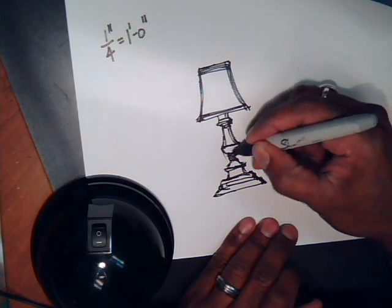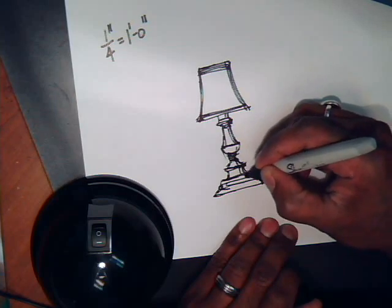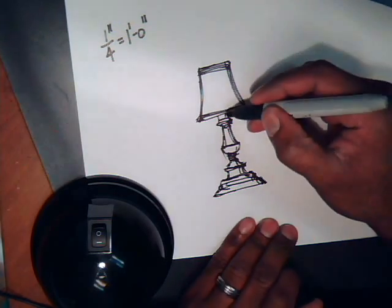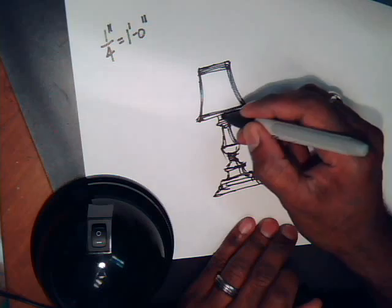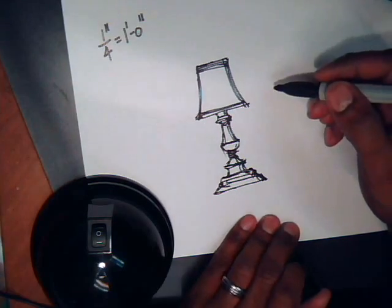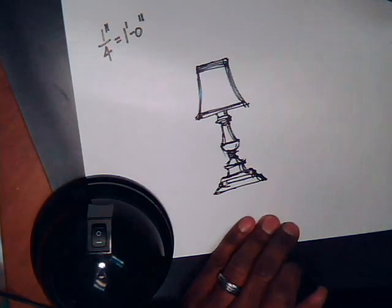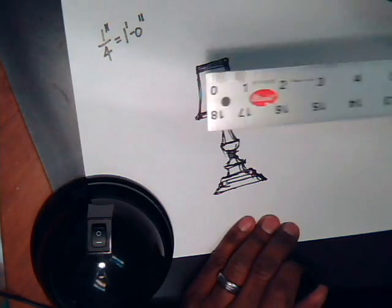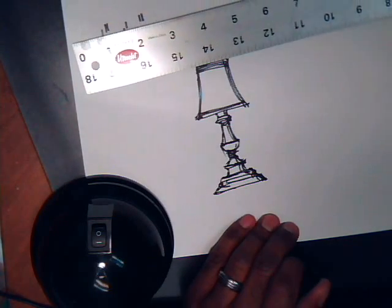So here's my lamp. And after I finish the lamp, now I'm going to measure it, and I'm going to measure it using my ruler. And I want to get the dimension lines.